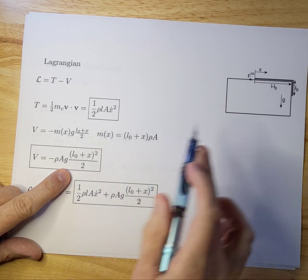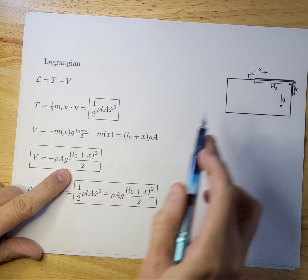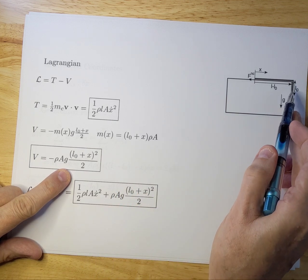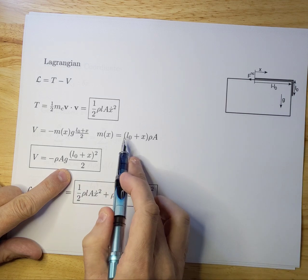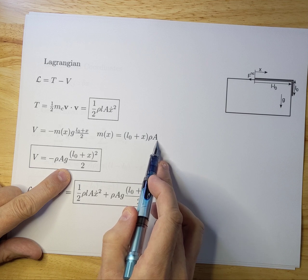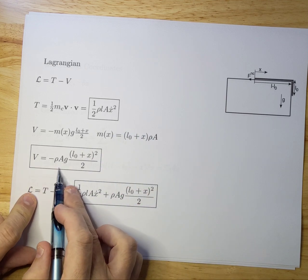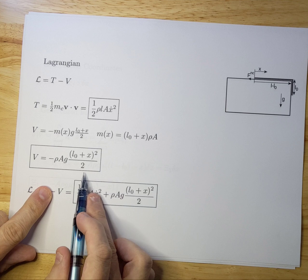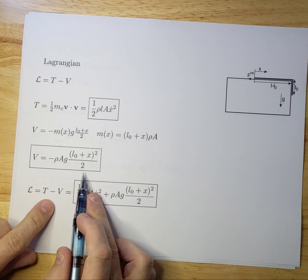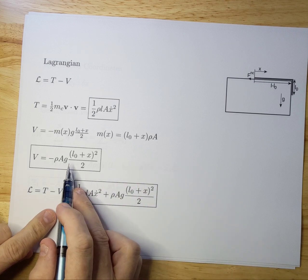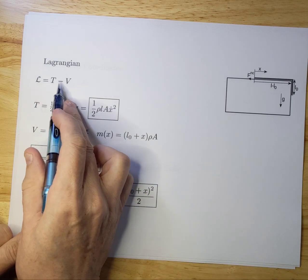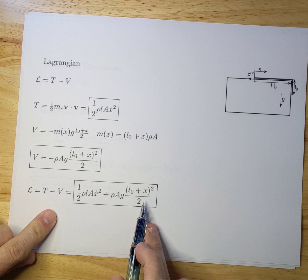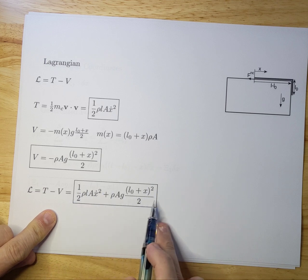So that is M times G times the movement, which is L zero plus X over two. And the mass of the chain piece that moved is of course L zero plus X in this case and not divided by two. It's the whole thing because that's the whole thing that moved over the edge. It moved X downwards essentially. So it's L zero plus X times Rho times A. If you fill that out, you get for the potential energy minus Rho times A times G L zero plus X squared over two. So now we have an ability to just calculate the Lagrangian by subtracting T minus V. So you get this term minus this term, which becomes a plus. And here you have your total Lagrangian again.